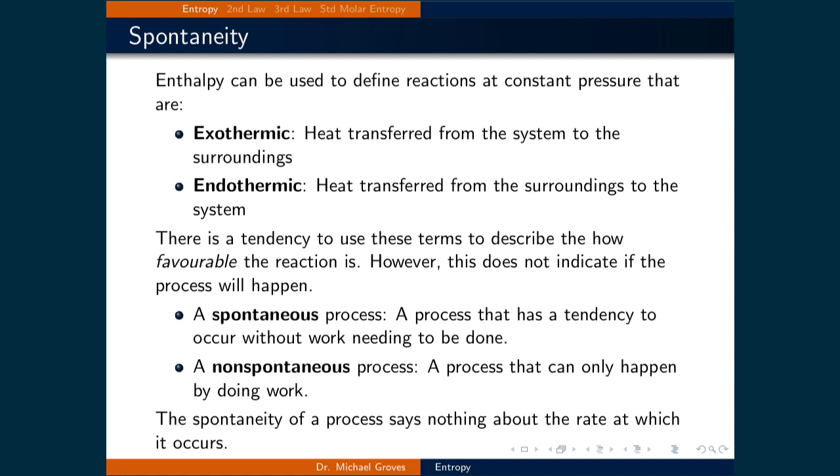That is what it means for something to be spontaneous. In other words, a spontaneous process is a process that has a tendency to occur without work needing to be done. In contrast, a non-spontaneous process is one that can only happen by doing work. Bear in mind that the spontaneity of a process has nothing about the rate at which it occurs.